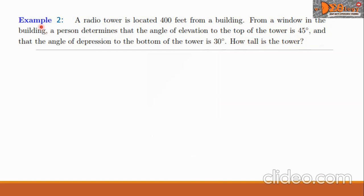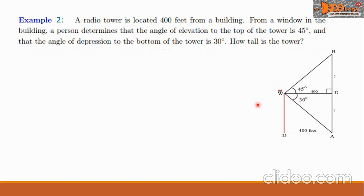Let's have example 2. A radio tower is located 400 feet from a building. From a window in the building, a person determines that the angle of elevation to the top of the tower is 45 degrees and that the angle of depression to the bottom of the tower is 30 degrees. How tall is the tower?